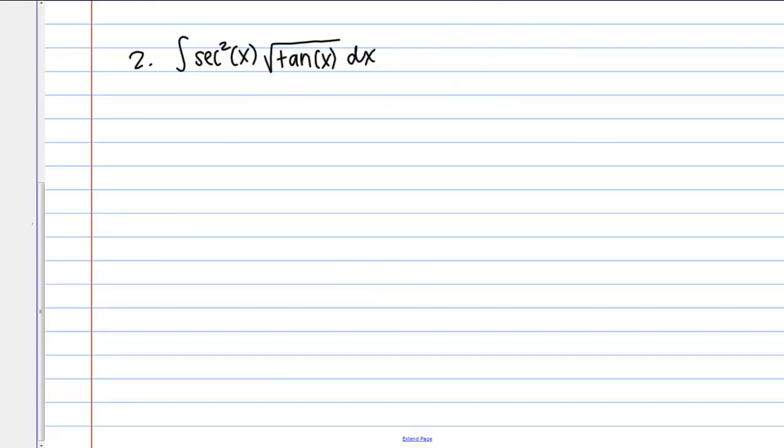Example number two is the antiderivative of secant squared x times the square root of tangent of x dx. Once again, this is not something that I can use my basic antiderivative rules on. It's pretty complicated. I've got a product and then I've got the tangent under the square root.